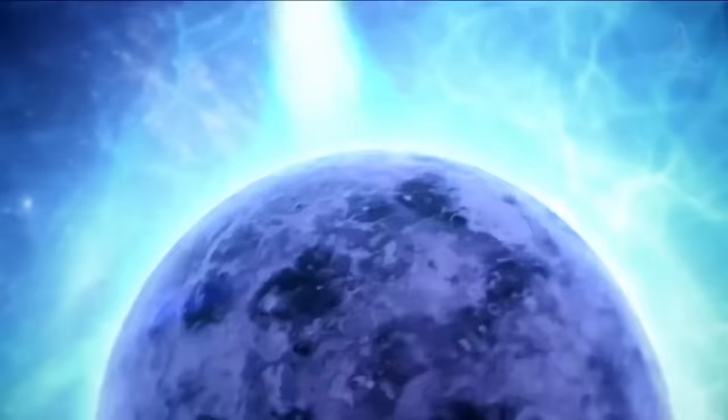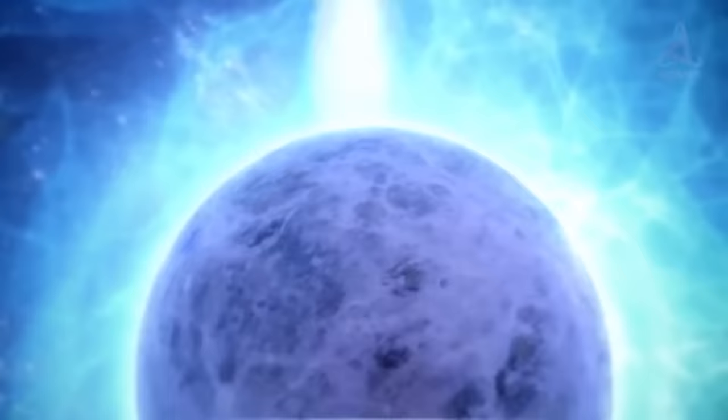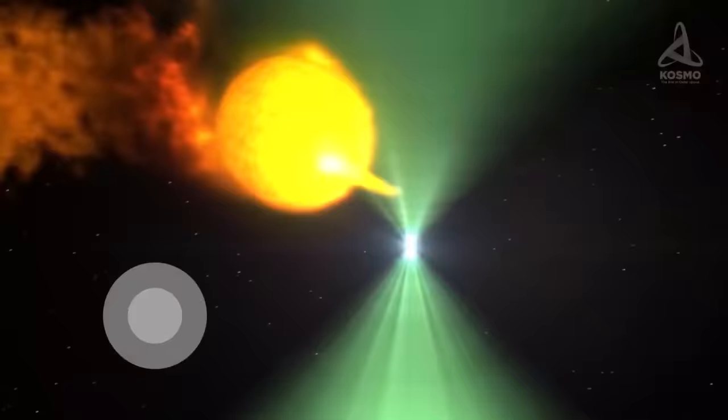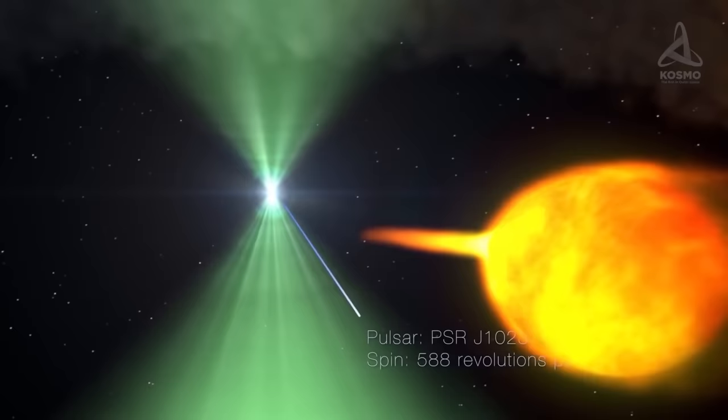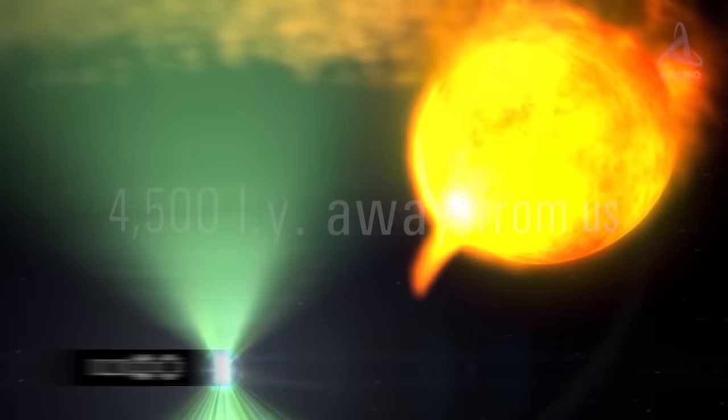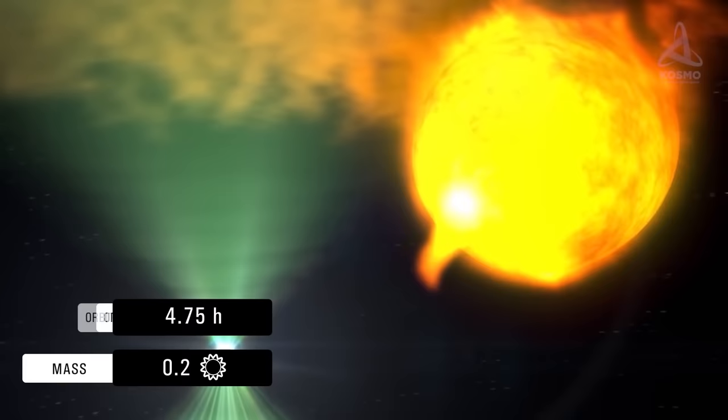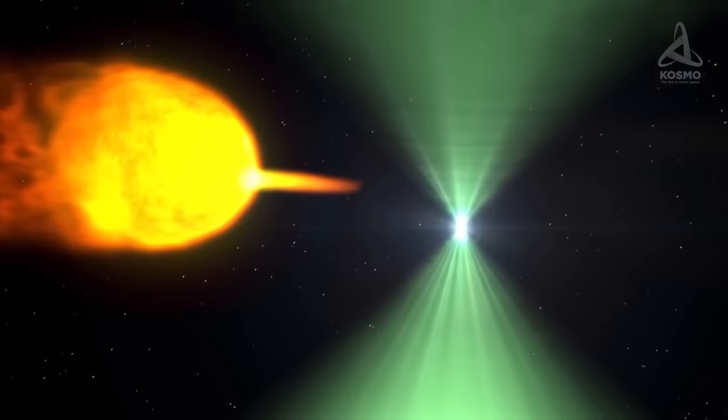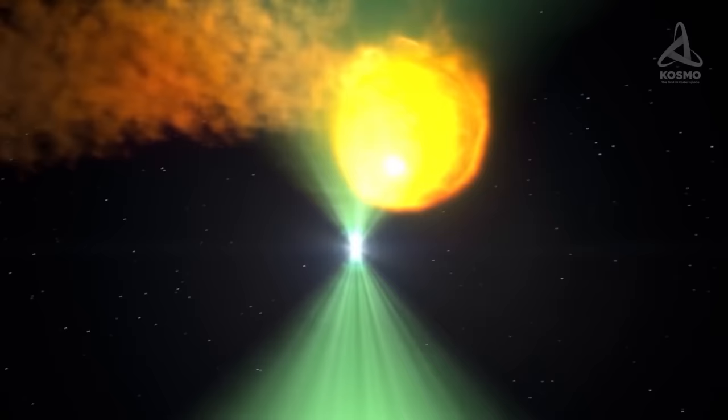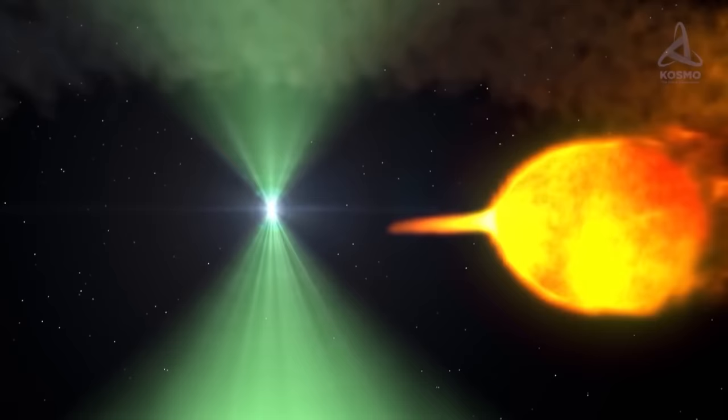However, it was the first ever transitional optical pulsar with a spin rate of this intensity discovered by scientists. The rotation period of J1023 plus 0038 is 1.69 milliseconds, which is 0.00169 of a second. The object itself is 4,500 light-years away from us. The mass of its companion star is 0.2 that of the Sun. It takes the pulsar 4.45 hours to orbit its companion star once. To date, the properties of J1023 plus 0038 have not been investigated in detail, although it is likely to be a not very massive neutron star.